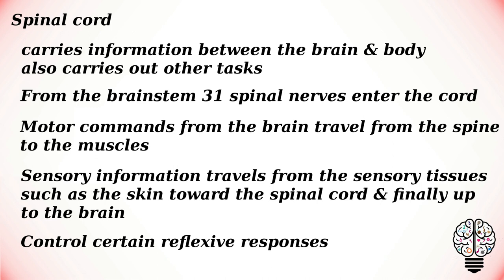The spinal cord runs almost the full length of the back and carries information between the brain and body, but also carries out other tasks. At the brain stem, where the spinal cord meets the brain, 31 spinal nerves enter the cord. Along its length, it connects with the nerves of the peripheral nervous system running in from the skin, muscles, and joints. Motor commands from the brain travel from the spine to the muscles, and sensory information travels from sensory tissues such as the skin towards the spinal cord and up to the brain. The spinal cord also contains circuits that control certain reflexive responses.